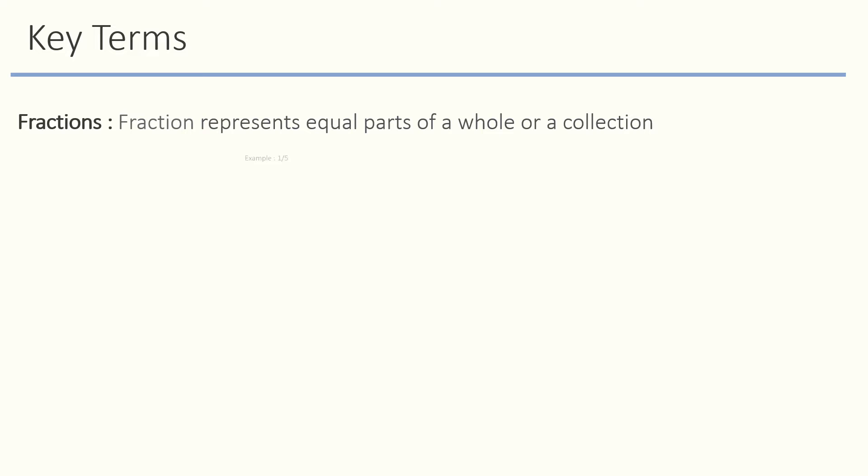For example, fraction 1 by 5 means one part out of five equal parts. There are several types of fractions. Proper fractions are where the numerator is smaller than the denominator, like in 2 by 5.